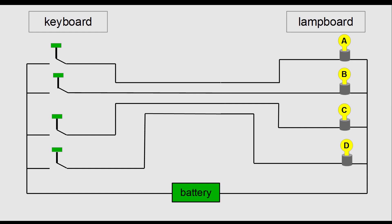This is a simplified model of the Enigma. On the left side we have the keys from the keyboard. In our example we have only four letters: A, B, C, and D. On the right side we have the lamps from the lamp board.